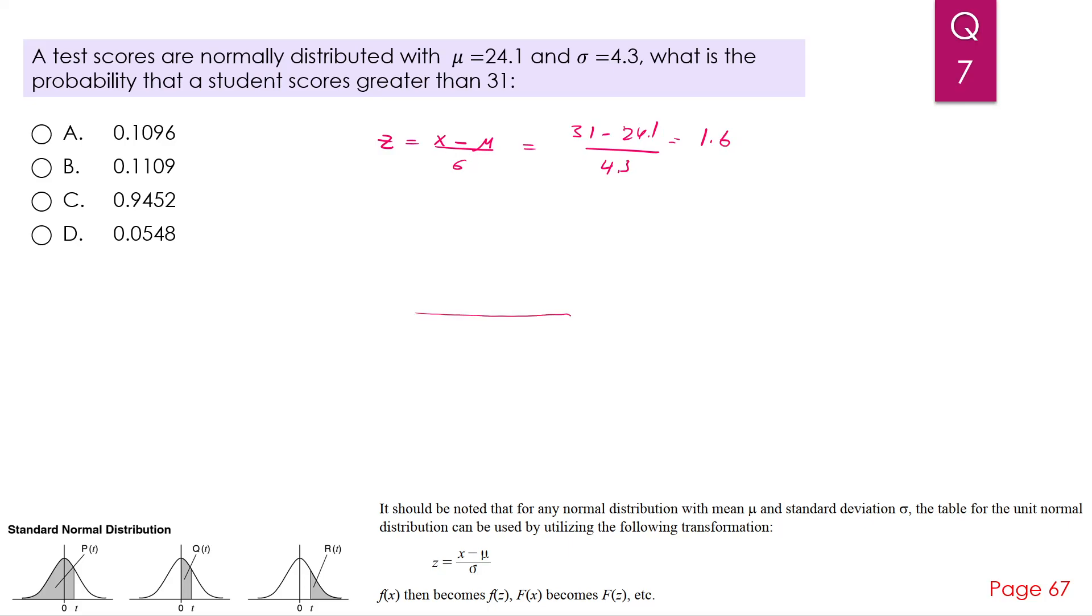You know how the normal distribution looks like. We are being asked the probability that a student scores greater than 31. Our μ here is 24.1, this is our 31, and this is the probability required. That matches the standard normal distribution with μ = 0, and our z value is 1.6, and we are looking for that value.